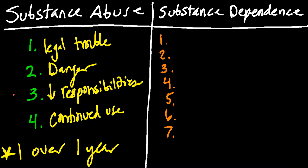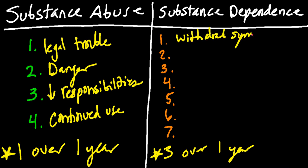Now, how do we differentiate abuse from substance dependence? Notice abuse doesn't sound so bad — getting in legal trouble for smoking weed means you're abusing marijuana, but not necessarily dependent on it. Dependence requires three of the following criteria over the course of one year. That's the key diagnostic differentiation: one criterion for abuse, three minimum for dependence. For example, if you drank alcohol for 30 years and suddenly stopped, you'd experience withdrawal symptoms — that qualifies as substance dependence.